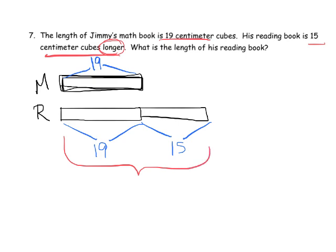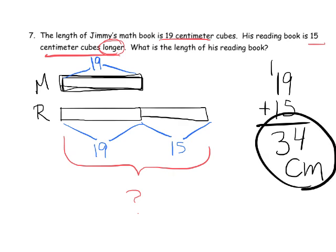Well, that's just 19 plus 15. 9 plus 5 is 14, carry the one, so that's 34 centimeters. So the length of the reading book is 34 centimeters.